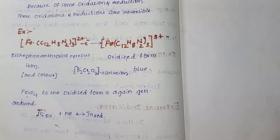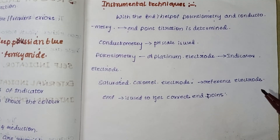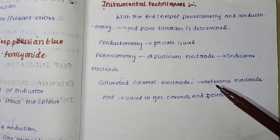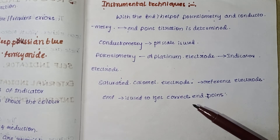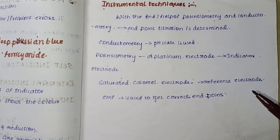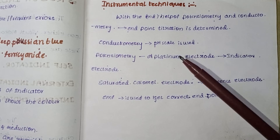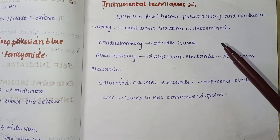The fourth type is instrumental techniques. With the help of actual instruments — specifically potentiometry and conductometry — we can detect the end point accurately. Using conductometry with a pH scale, or potentiometry with an EMF scale, we can determine the correct end point.